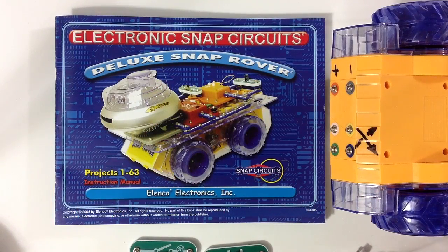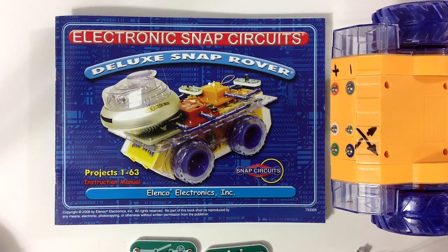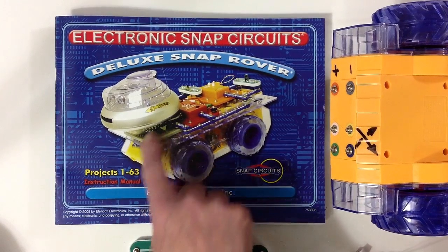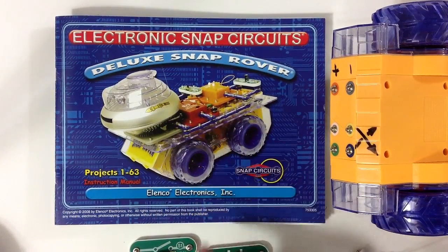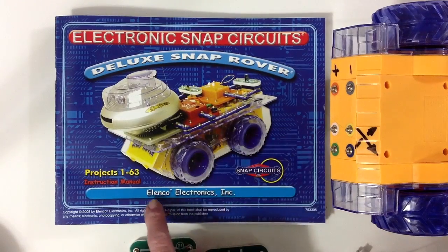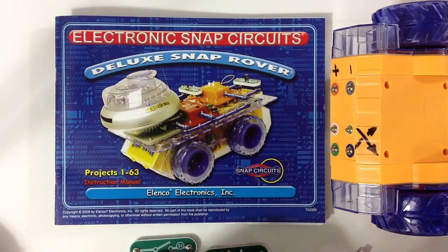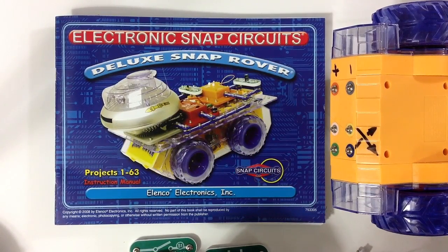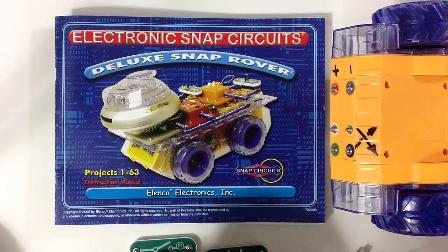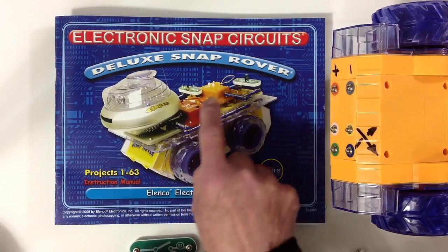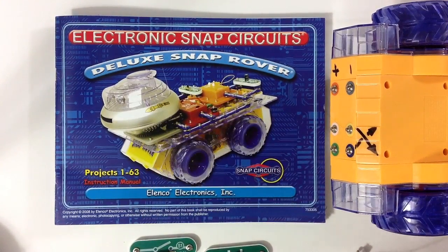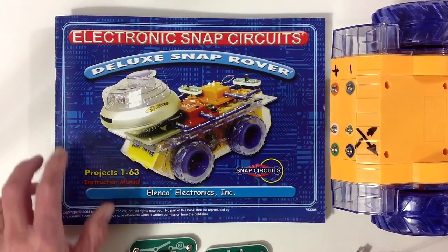Hello, Jeepa here again. This is our second in a series of learning how to make this robot here. This is a robot made by Elenco Electronics called the Deluxe Snap Rover. One of the things I like about it is that it comes in lots of pieces and you get to learn how to put them together, which is kind of fun.